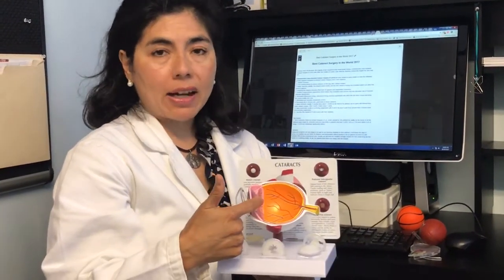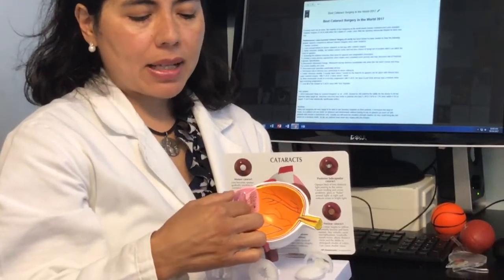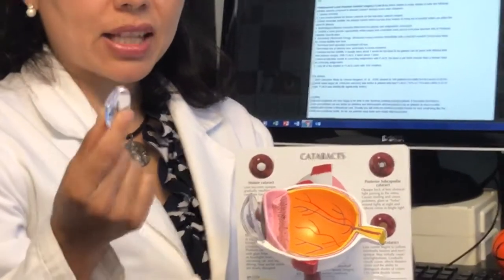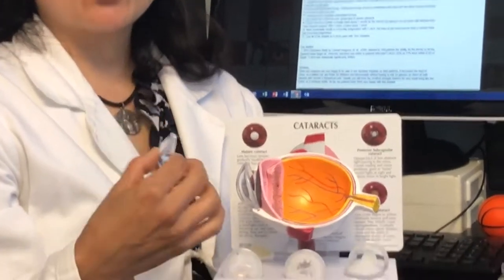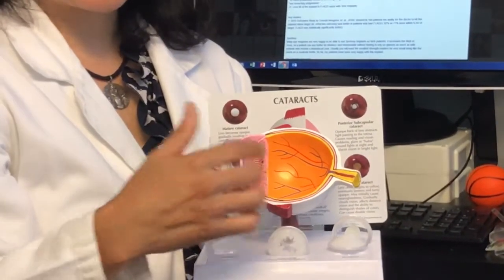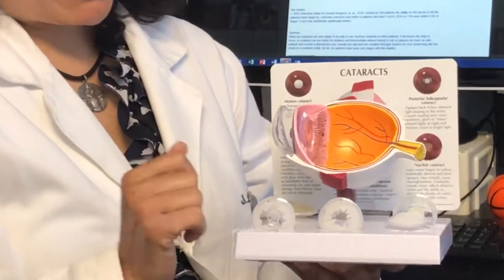Sometimes a cataract can also cause astigmatism. The cataract is basically the clear lens, which is like a pillow in an enclosed pillowcase, that becomes hazy. There's many kinds of cataracts.